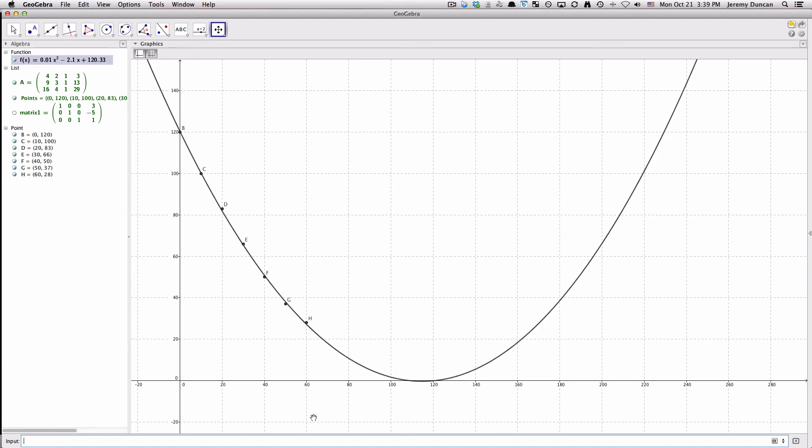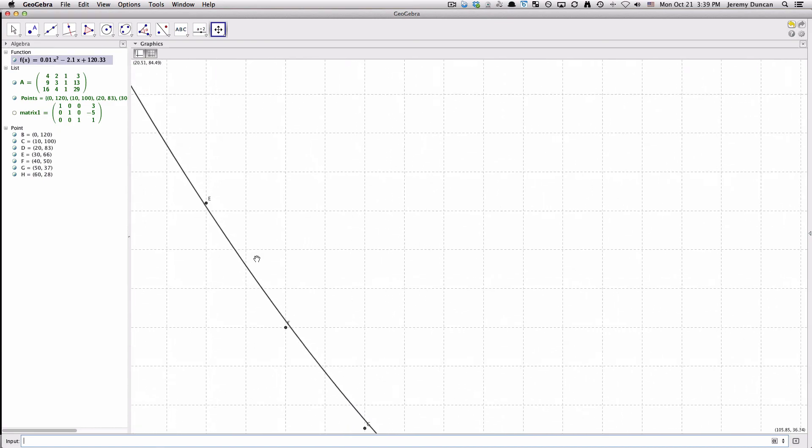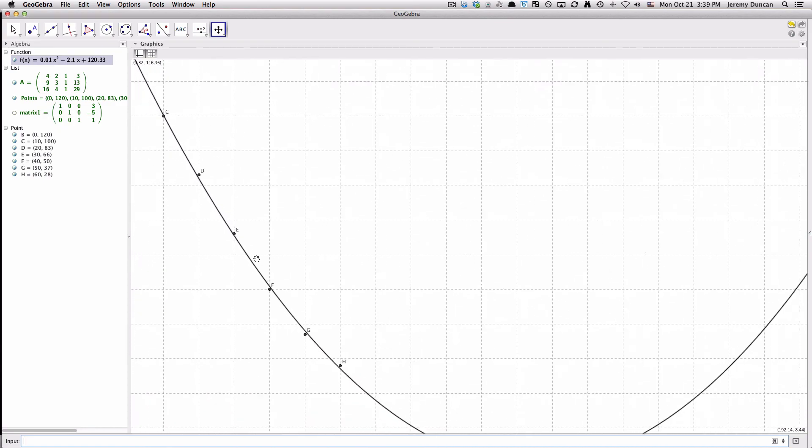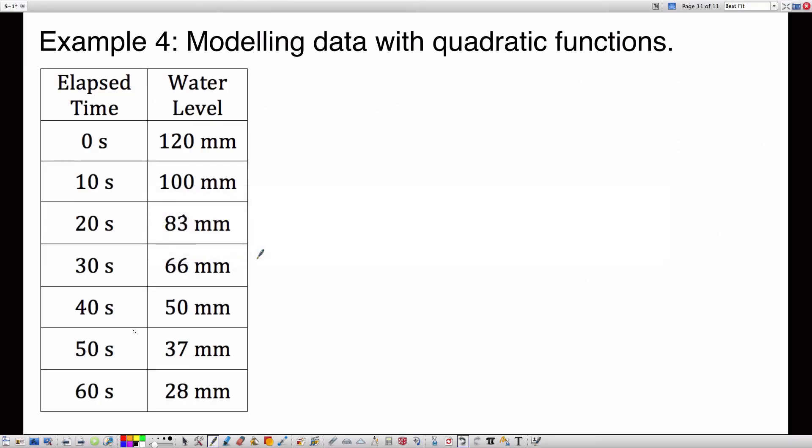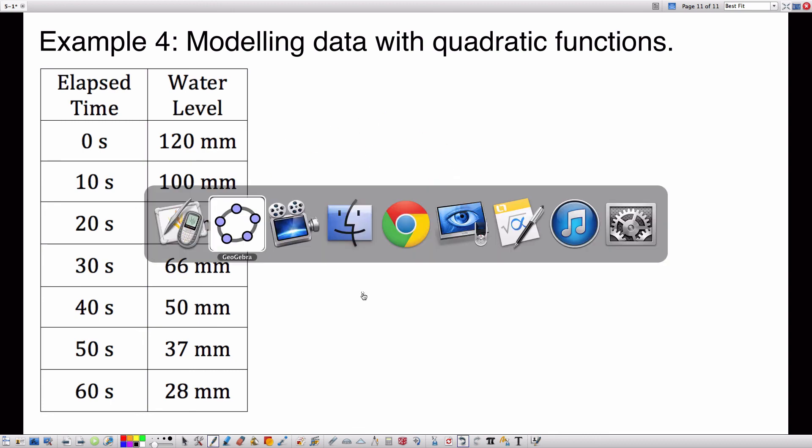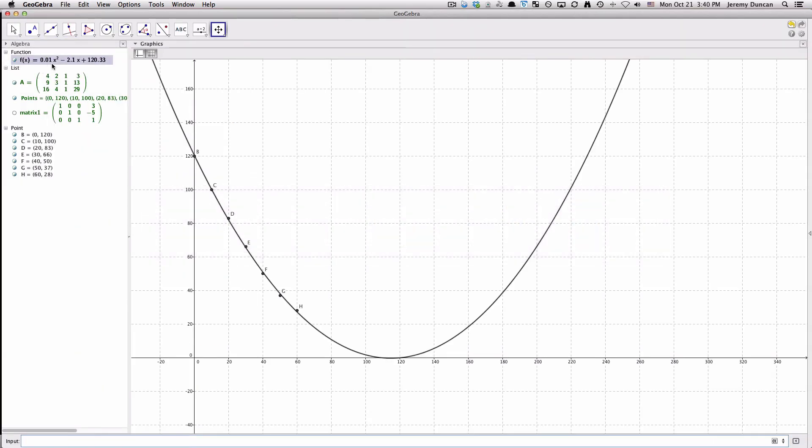What it does is it creates the best fit parabola for that data. You can see up here, this is the equation of that parabola, and here's the model. If I zoom in really close, you'll see those points aren't actually on the parabola, it's just the best fit parabola to those points. If I came back over here and it said model the data with the quadratic function, here is my quadratic function: 0.01x squared minus 2.1x plus 120.33.